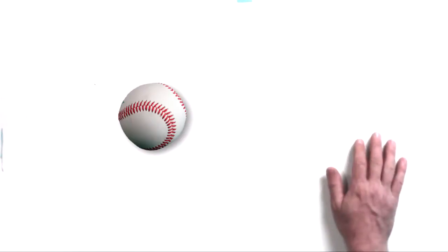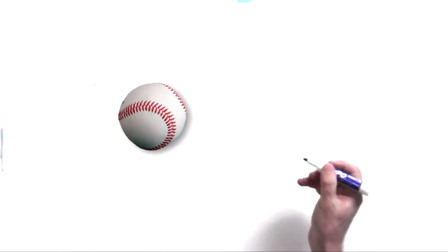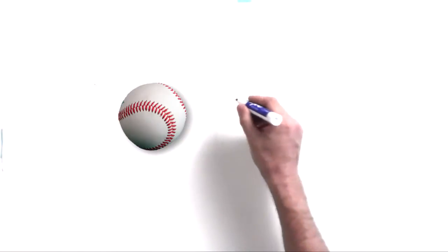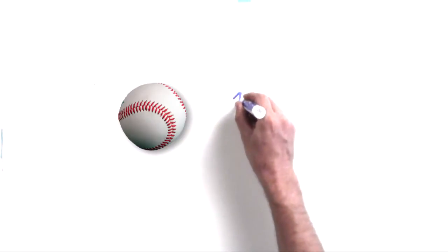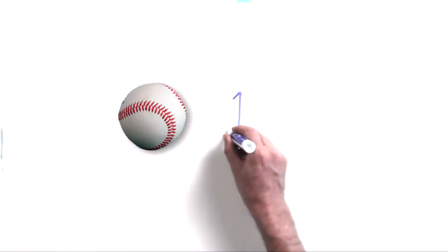We're going to get started with learning how to count. So we're going to start with, let's say, a baseball. Let's just put one baseball on the screen here. And we are going to write the number one like this. There's a baseball, and now let's write the number one.